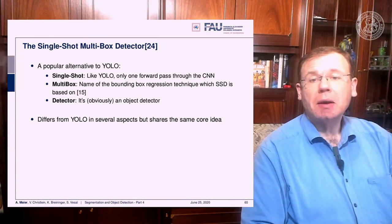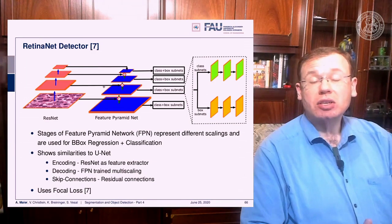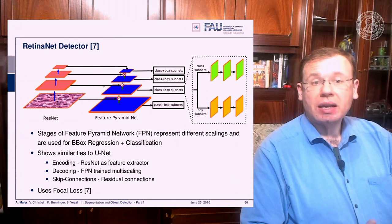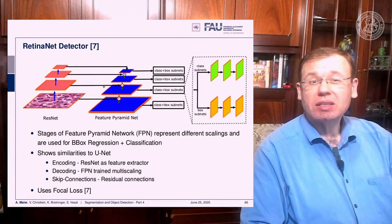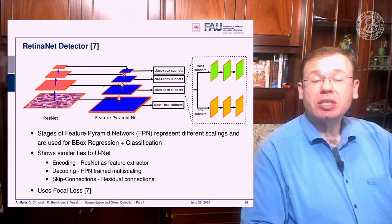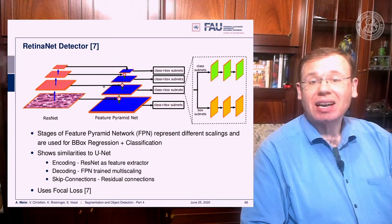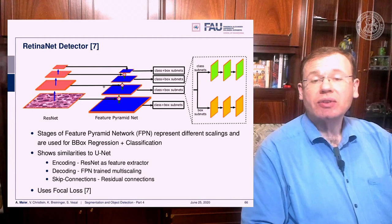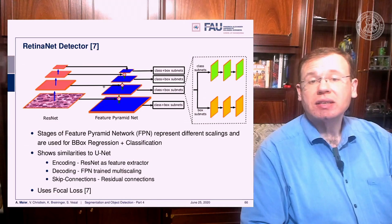SSD differs from YOLO in several aspects but shares the same core idea. For tasks like histological images with very high resolution, you can also work with detectors like RetinaNet. RetinaNet uses a ResNet CNN decoder, very similar to what we've seen in image segmentation, and then uses a feature pyramid network to couple the different feature maps produced with the original input images from the decoder. It's very similar to a U-Net, but in contrast to U-Net, it does class and box prediction using a subnet on each scale of the feature pyramid network — a single-shot detector that uses U-Net simultaneously with class and box prediction.